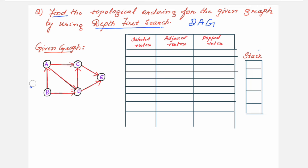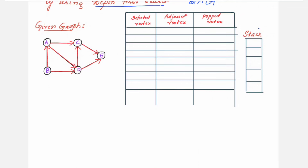Following the algorithm steps, select any vertex. I will start from B, which has no incoming edges — preferably you choose a vertex with no incoming edges. I place B in the stack, and it becomes my selected vertex. For vertex B, the adjacent vertices are A and D. I am selecting A. I write A in the adjacent vertex column. Whichever neighbor you choose also becomes a visited vertex and you keep it in the stack. I have kept A in the stack.